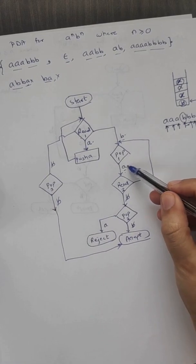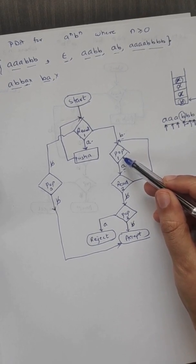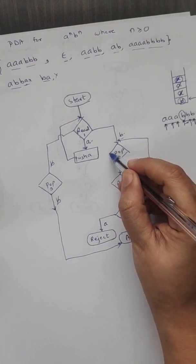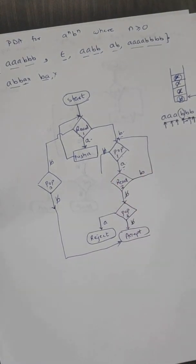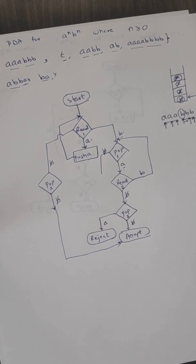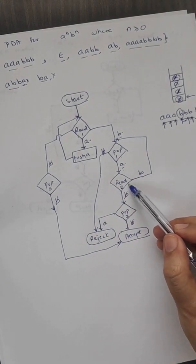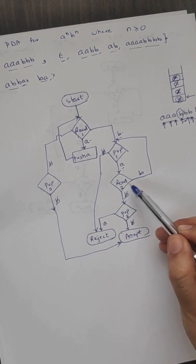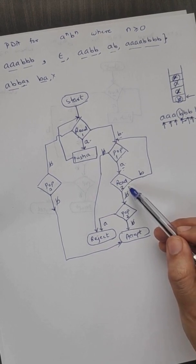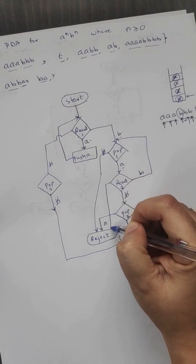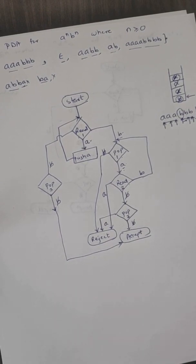From pop one, if we get an a that's fine, but if we get a blank as the pop symbol instead of an a — meaning number of a's was less than number of b's — the string should be rejected. From read two, if we receive an a after having already received a b, that also means the string is invalid and should be rejected.